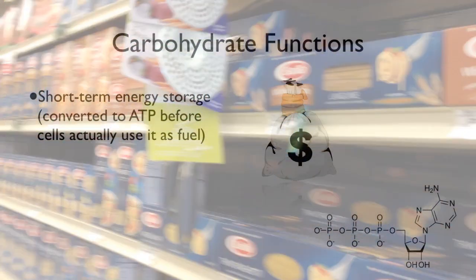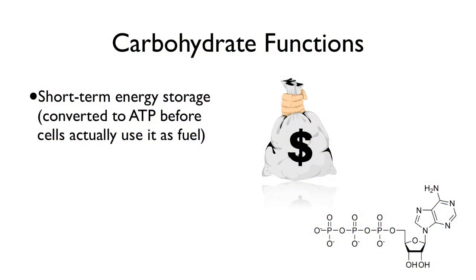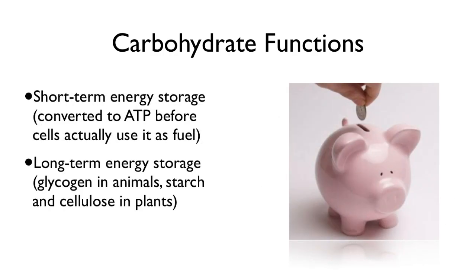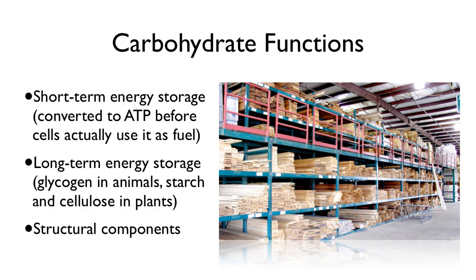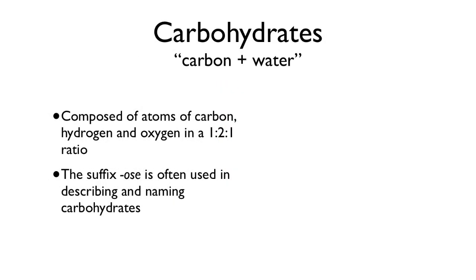We use carbohydrates for short-term energy storage. These carbohydrates actually have to be converted into ATP, which is what your cells actually use to do work. But carbohydrates are really the source of most of that ATP. We use carbs for long-term energy storage, and we also build a lot of things — we use them for structural components. You'll see some examples of that in a little bit.